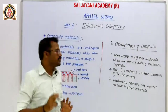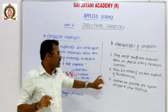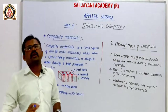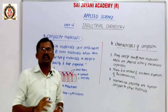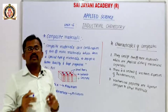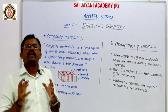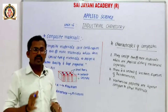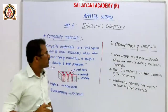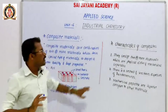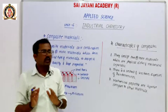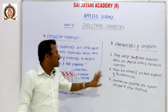The third characteristic is that mechanical properties of composite materials are superior to other materials. So these are the three characteristics: first, they consist of two or more materials which are physically different and mechanically separable; second, there is a control and uniform dispersion of reinforcement; third, mechanical properties are superior to other materials.